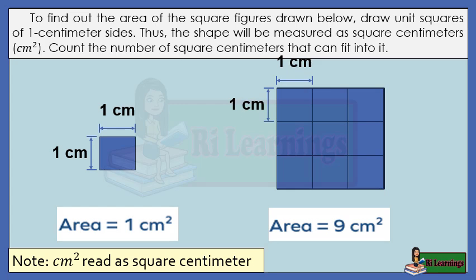Take note that cm with a small superscript 2 above the letter m will be read as square centimeter.